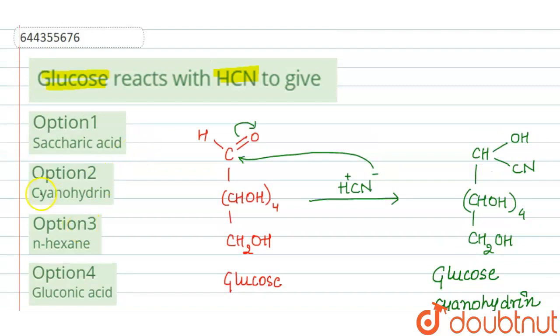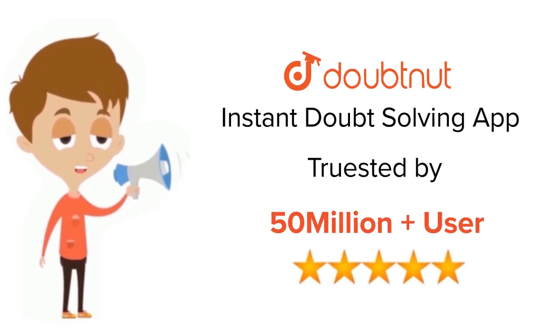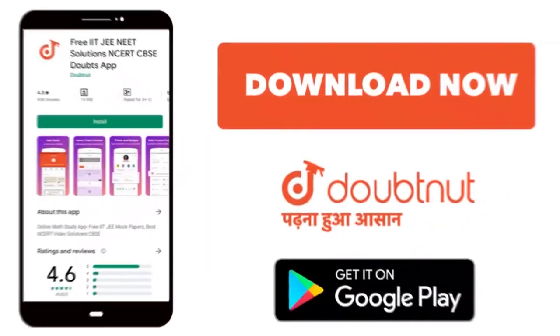So our correct option will be option 2: cyanohydrin. For class 6 to 12, IIT-JEE and NEET level, trusted by more than 5 crore students. Download Doubtnut today.